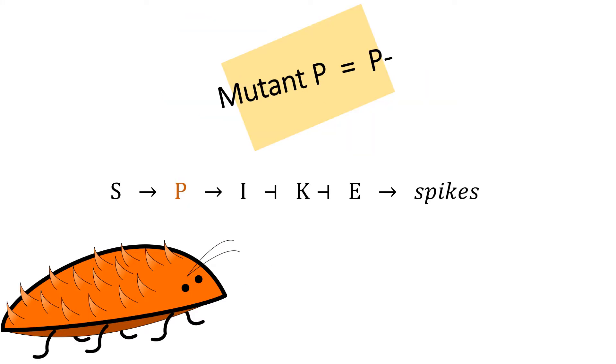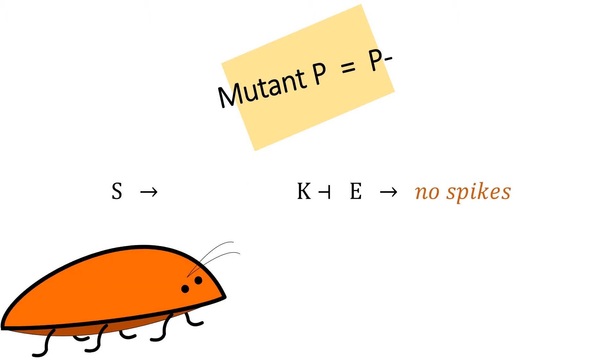If a cell has a mutant P gene, this gene product will not be able to stimulate production of the I product. In turn, the I product cannot block the K gene. The active K product will inhibit transcription of E's product, ending in no spike protein production. If all of the beetle's ectoderm cells had a mutant P gene, it would be totally smooth.